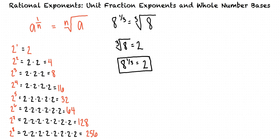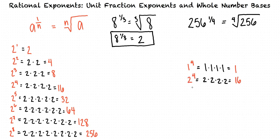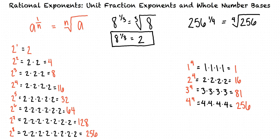What about the other problem, 256 to the 1 fourth? I know that's the same as the fourth root of 256, and I see that 2 to the eighth power is 256. But we are looking for the fourth root of 256, not the eighth root. Let's try listing out some fourth powers of a few small integers: 1 raised to the fourth power equals 1, 2 raised to the fourth power equals 16, 3 raised to the fourth power equals 81, and 4 raised to the fourth power equals 256. So 4 is the fourth root of 256 because 4 to the fourth power equals 256, which means that 256 to the 1 fourth power is 4. Great job.